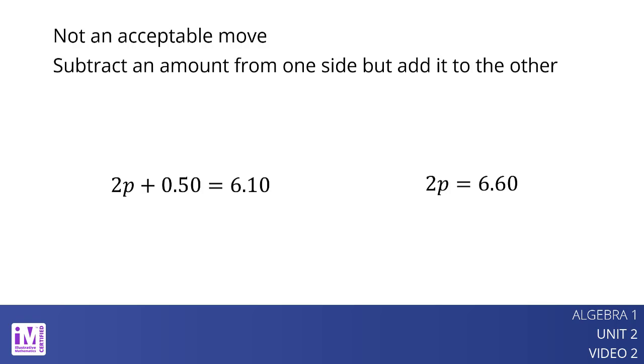the result is 2p equals 6.60. The solution to this equation is 3.30, not 2.80.